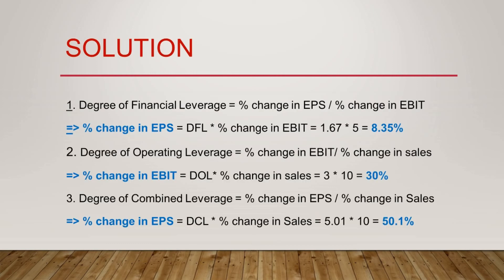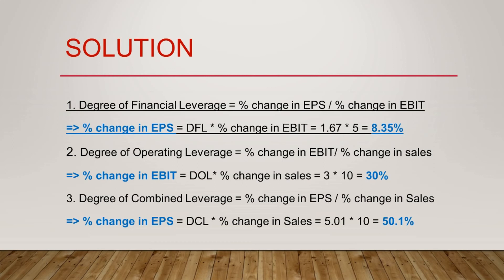The formula for Degree of Financial Leverage is: percentage change in EPS / percentage change in EBIT. We need to calculate percentage change in EPS. We already calculated the Degree of Financial Leverage as 1.67, and the percentage change in EBIT is given as 5%. So: 1.67 × 5% = 8.35% change in EPS. For the next question — finding percentage change in EBIT when percentage change in sales is given — we use the DOL formula: percentage change in EBIT / percentage change in sales.